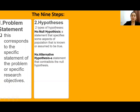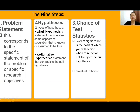Number two is the hypothesis. There are two types: the null and the alternative. The null usually specifies some aspect of the population that is known or assumed to be true — this is usually no difference, no significant relationship, no impact, or no effect. The alternative is just the opposite of the null hypothesis. Third, the choice of test statistics, including the level of significance, is the basis at which you will decide when to reject or accept the null hypothesis, and this determines the statistical technique.